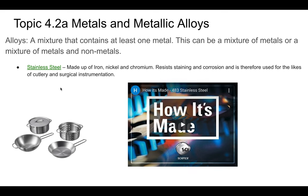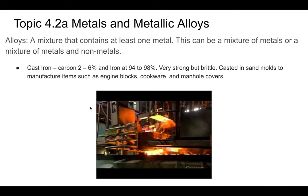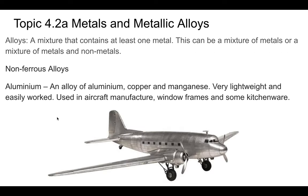Stainless steel, which we see all the time, is made of iron, nickel, and chromium, and it's used to make cookware. Cast iron is also a ferrous alloy with a higher percentage of carbon — it's very strong but brittle. It's cast in sand molds and used for engine blocks, cookware, and manhole covers. There's a video showing how cast iron pots are made.